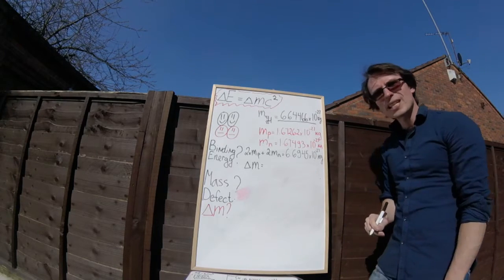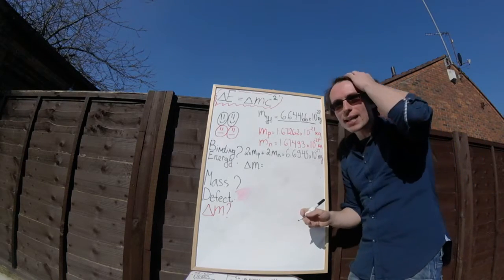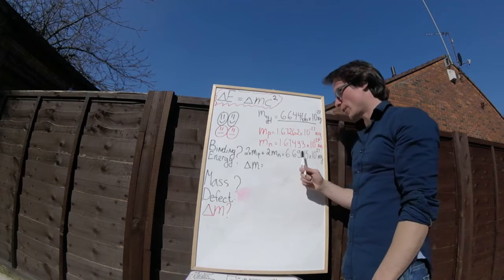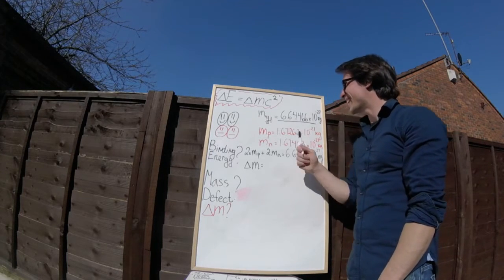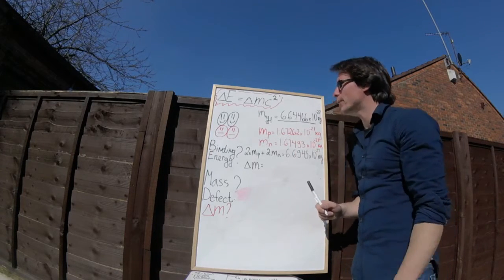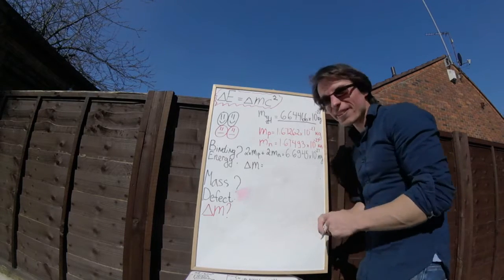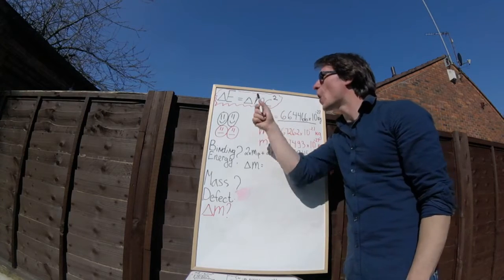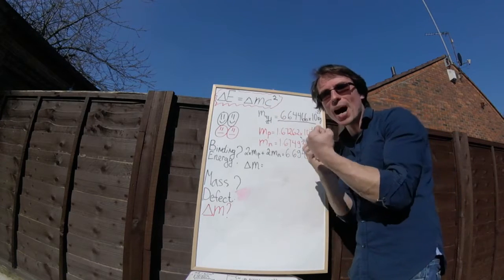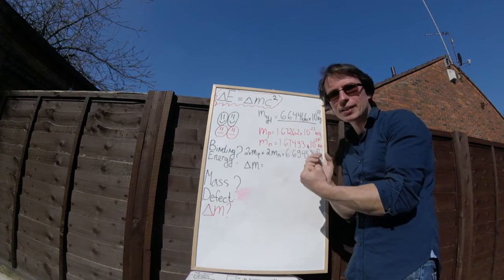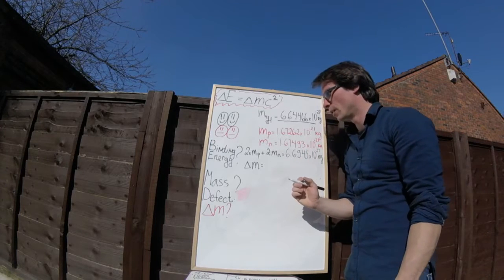We can see that the mass of the neutrons is higher compared to the mass of the alpha particle, and this is because some of that mass has gone in to be binding energy, and this is really crucial.